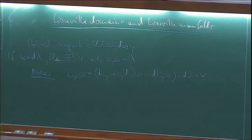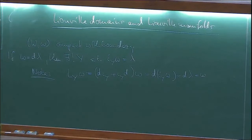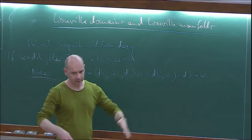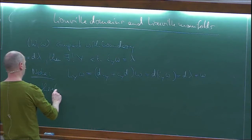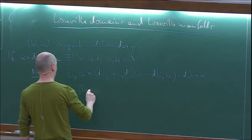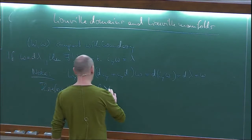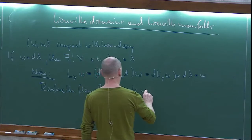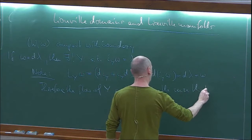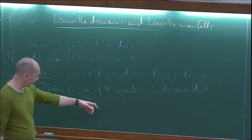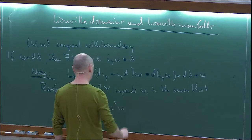The flow of Y has the property that it expands the symplectic volume, because the Lie derivative of the form is the form itself. So basically the flow of Y, when it exists, expands omega in the sense that if I pull back my symplectic form by the flow, then it gets multiplied by e to the t.